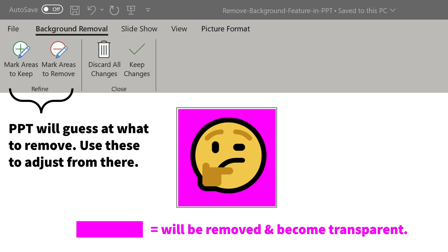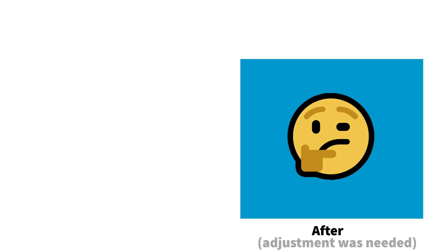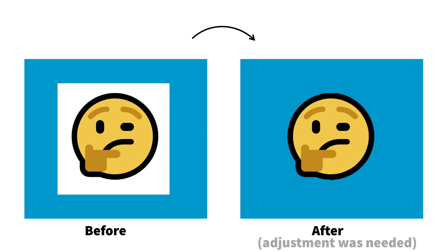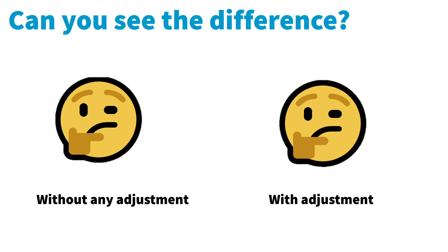You just click out when you're done, and there you go. I've put a blue square so you can see how the white outline was removed — that's the after, and here is the before. PowerPoint's first guess basically chopped part of the top outline out, so I had to use those adjustments to try to get as much of that back in as I could.